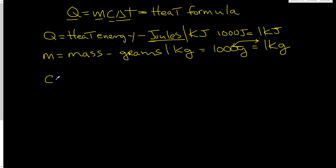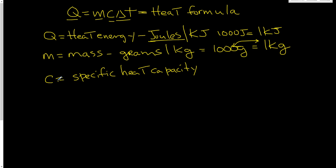C is our specific heat capacity — it is our constant in our formula. These are values that we simply look up on a standards chart; they are predetermined values. It's a somewhat unusual unit and it looks like this: Joules over grams degrees Celsius. What that represents is how much heat energy in Joules it takes one gram of a substance to increase or decrease one degree Celsius.